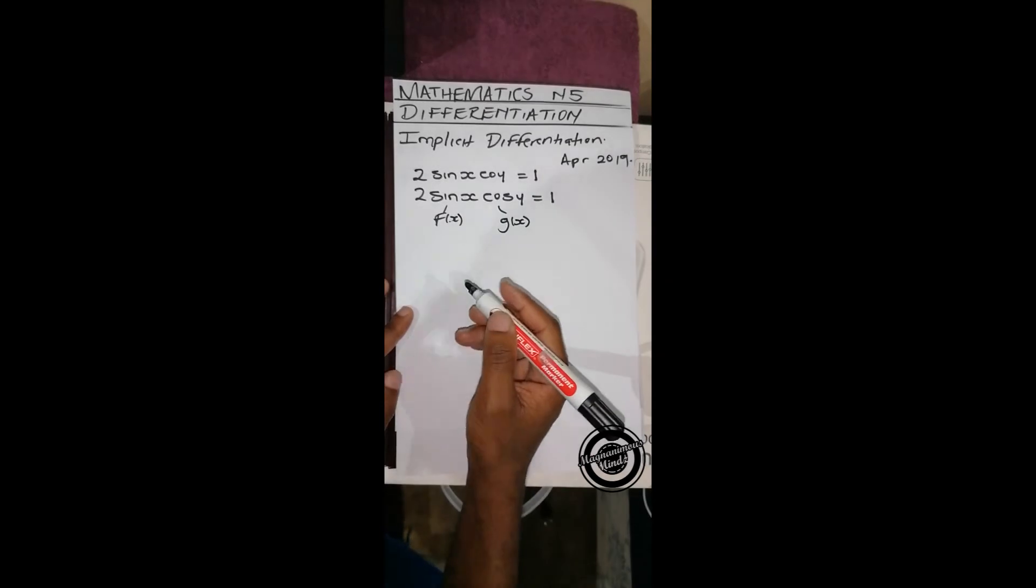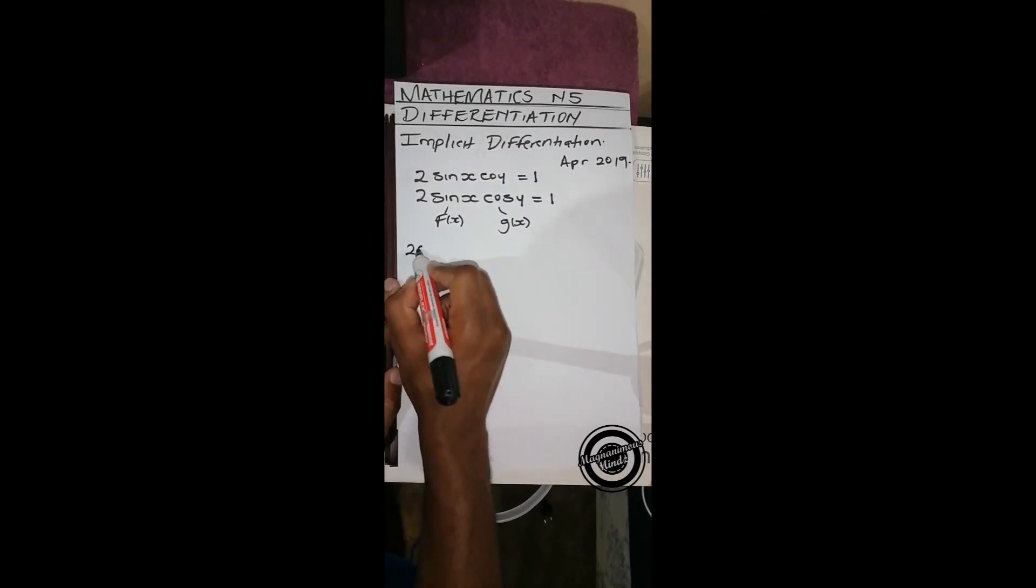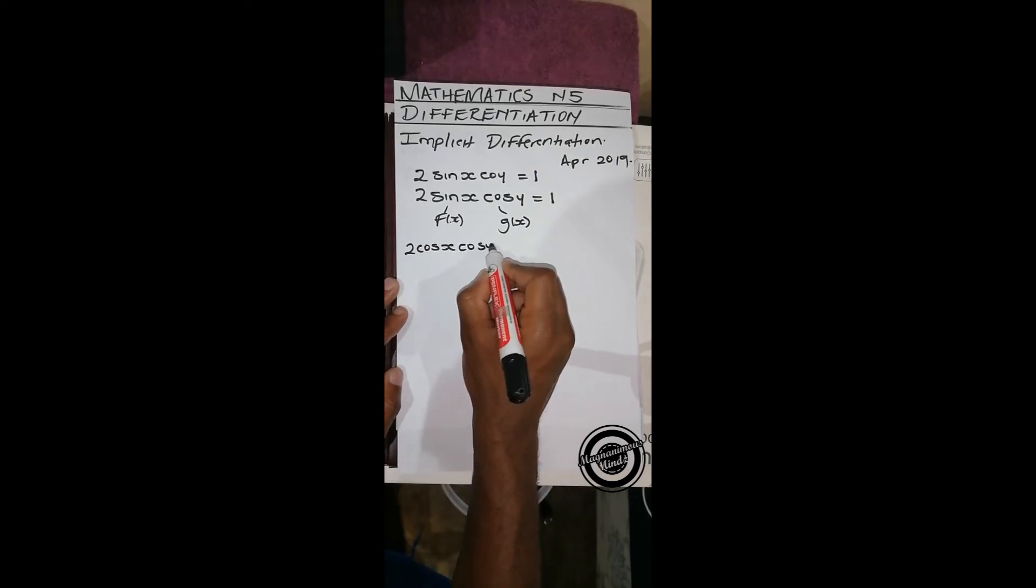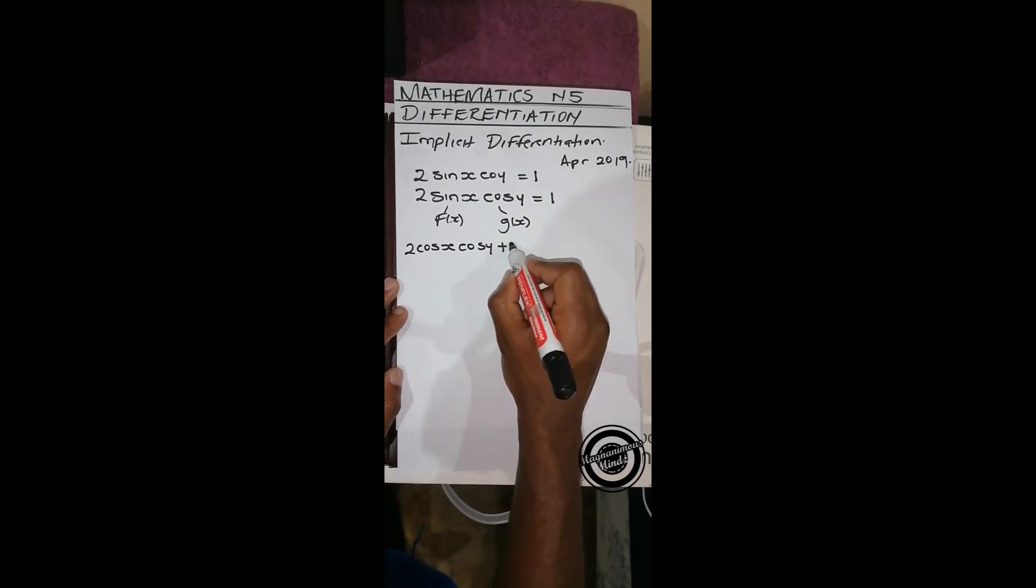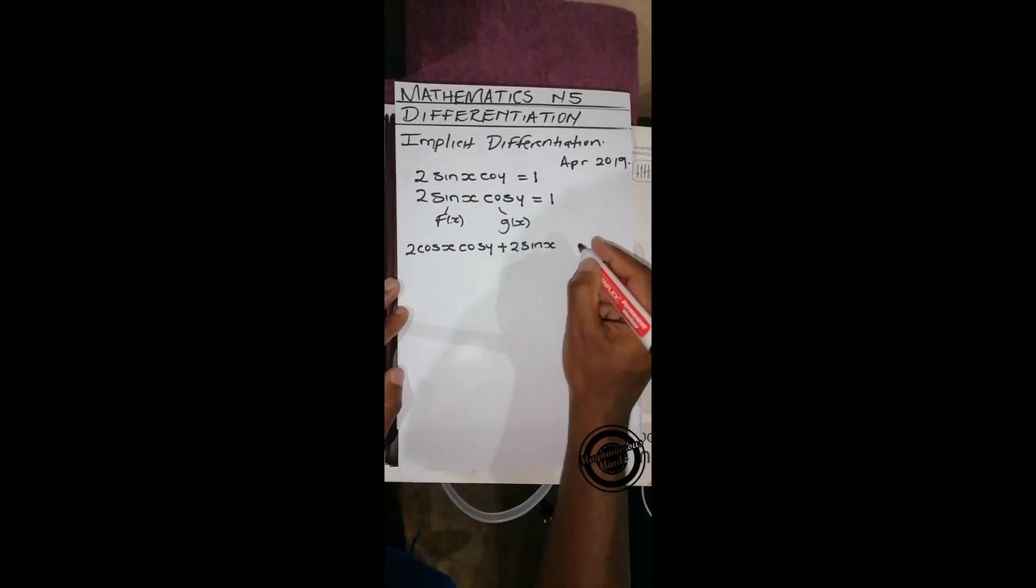you differentiate g(x). So to do that, we're going to get 2 cos x cos y plus 2 sin x